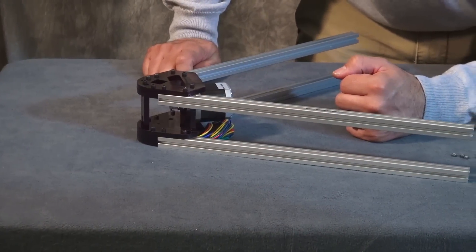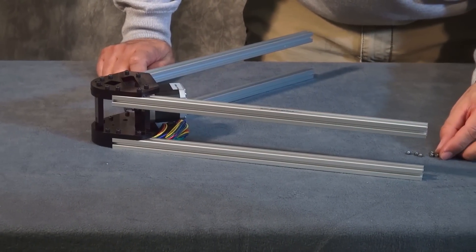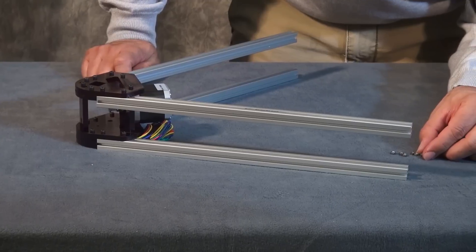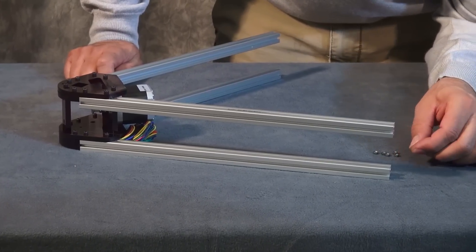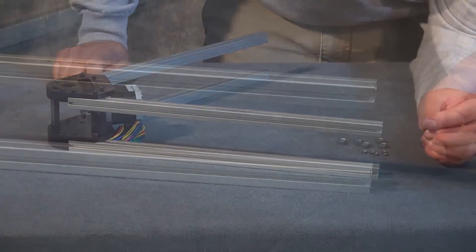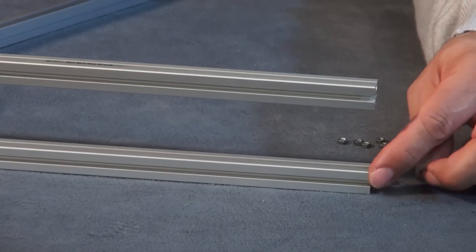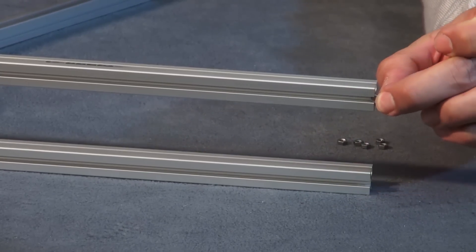For this next step, this is for the LCD upgrade. Now, if you did not order the LCD upgrade, I would highly recommend doing this step in case you decide to upgrade later and you don't want to have to disassemble your printer to add it. All right, so bar one, bar two, front side, you're going to put three nuts.